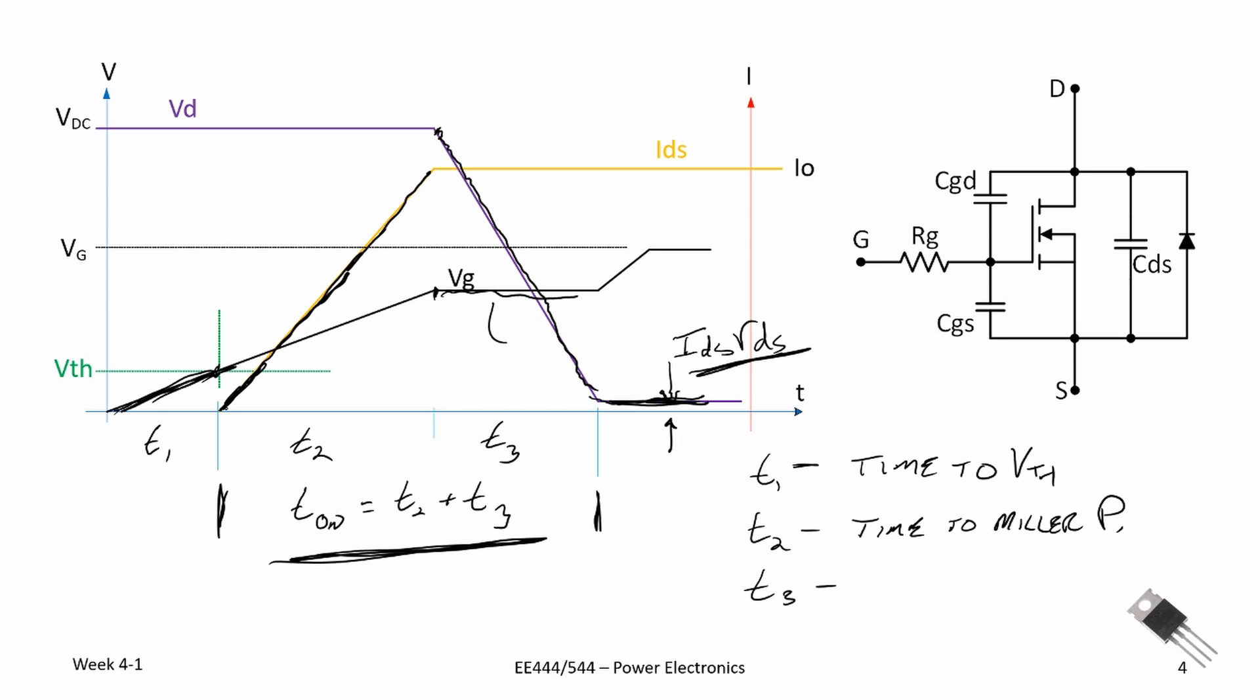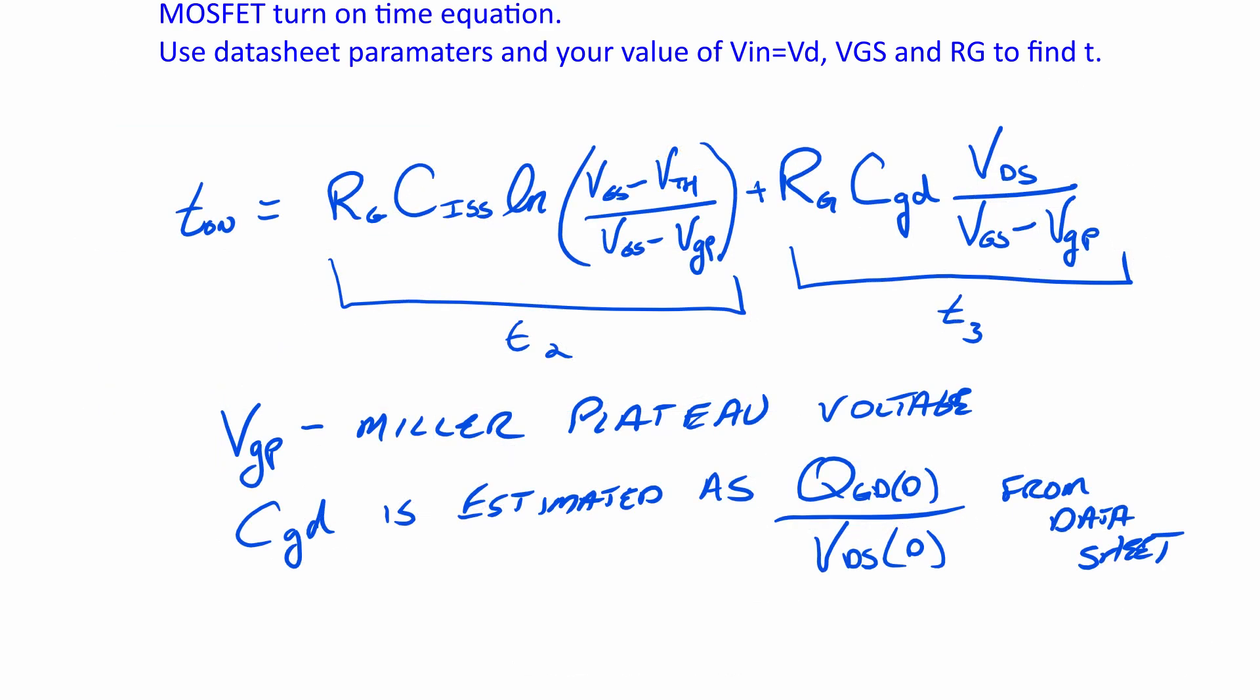This time is rather difficult to obtain and I'll put an equation up on the screen for you to look at, and it's based on values that you can take off from the data sheet. One of the values that's sometimes difficult to obtain is the capacitor between the gate and drain. It is often wrapped up within what's called the input capacitance CISS, which is CGD plus CGS.